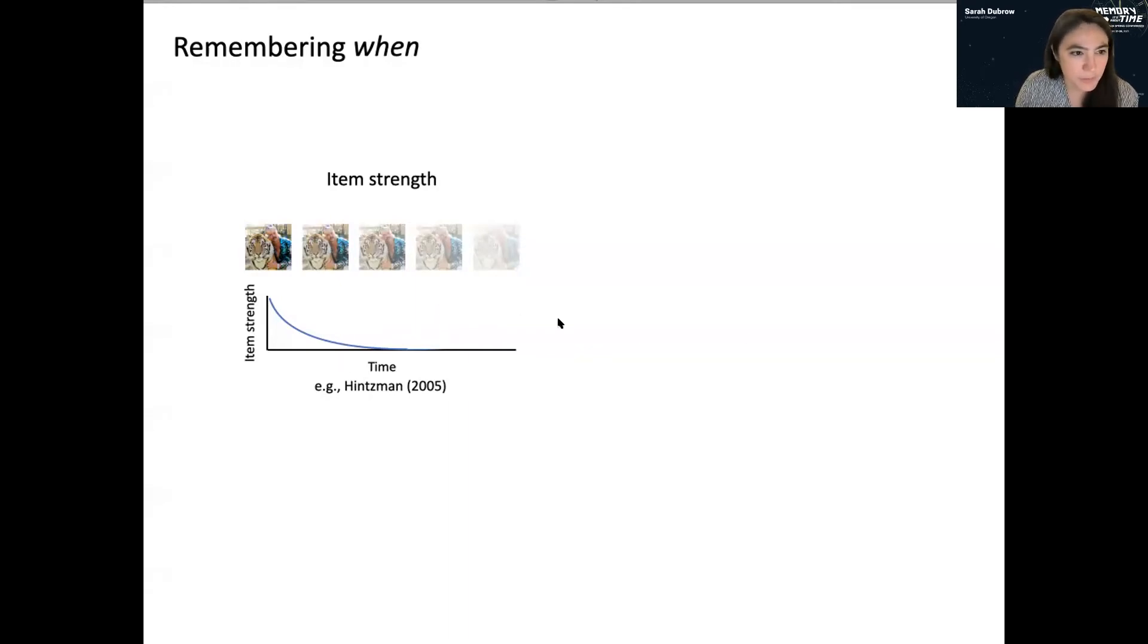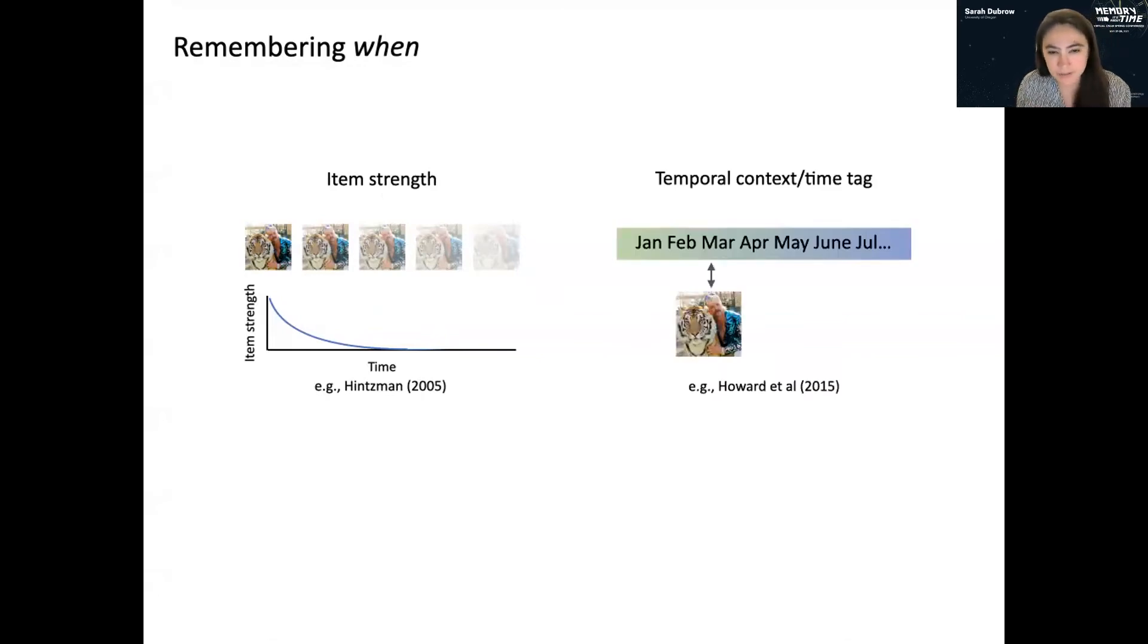So the stronger, the more recent you think it occurred. But you might want a temporal representation that's a little bit more precise or kind of separable from this item strength account. And there's this other kind of class of theories that basically suggests that you associate each event with a sort of location in time.